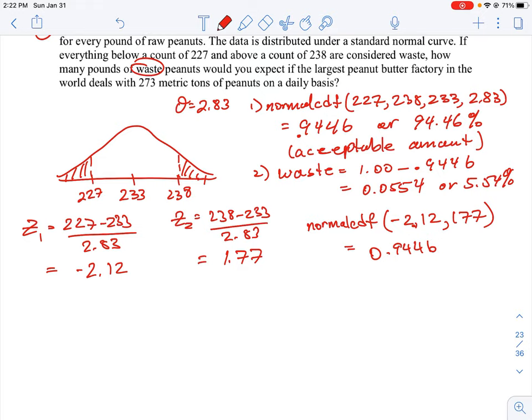Then we just have to calculate how many pounds of waste peanuts if we're having metric tons. They've made this a little bit complicated. We are looking for waste, so we know the percentage of the waste is 5.54%. So we have 273 metric tons.